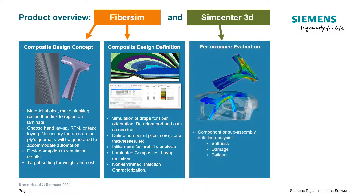Once you are happy with your design, you can simulate the structural integrity of the part while also accounting for the fiber orientations on each ply by using Simcenter 3D. Note that both FiberSim and Simcenter 3D operate within NX, so you never need to leave the software. Adjustments can be made if needed, and then structural simulations can be run again.